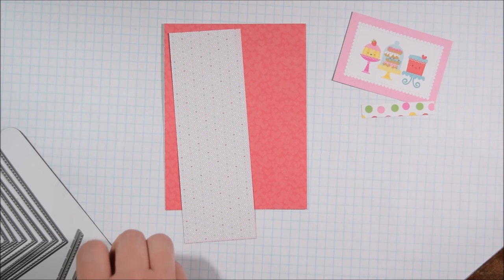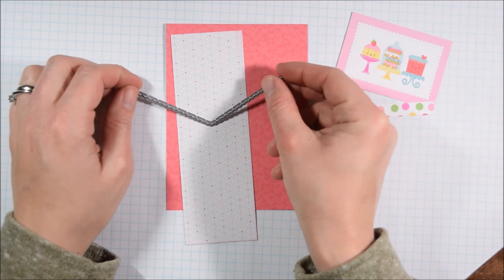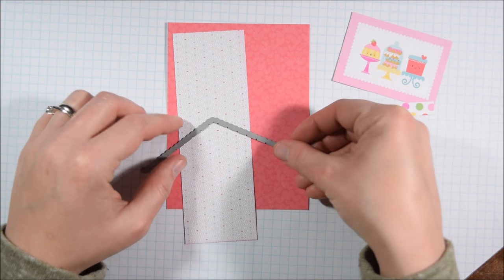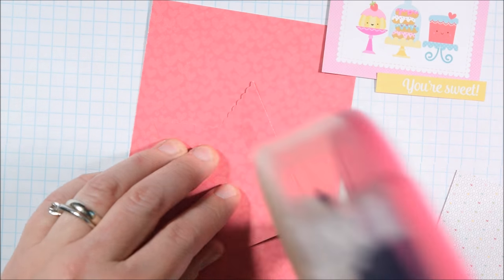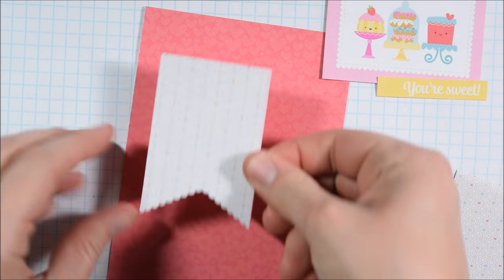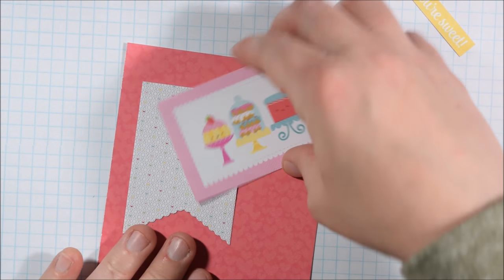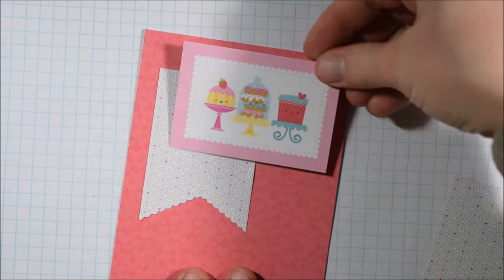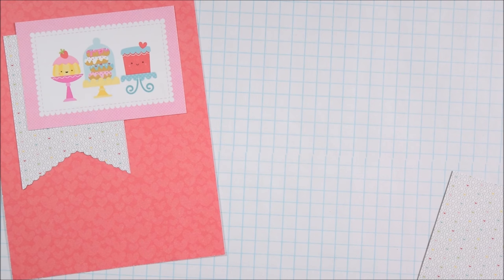And like I said, I do have this die set from Sunny Studios that I'm going to use to cut some banners. But you could easily cut your own banners. I'm just going to create a simple banner shape to put this die cut element on. Because if you just place it on top of the pattern paper, that looks a little less interesting.